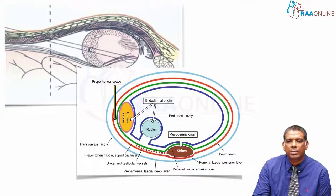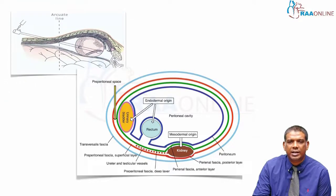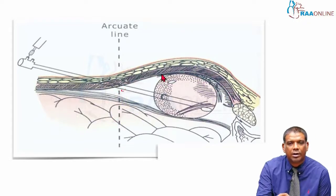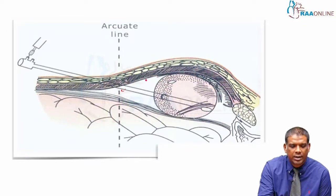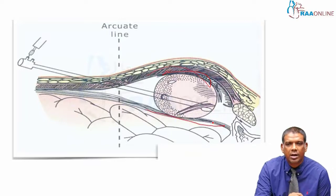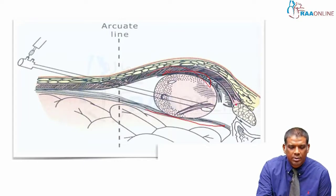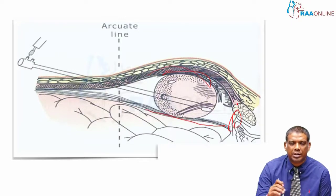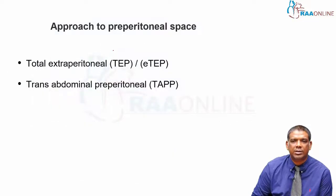When you approach a preperitoneal dissection below the arcuate line, you find that the structures present are the fascia transversalis, the rectus abdominis, and the peritoneum. The pubic bone will also be visible in this region. This is the preperitoneal space — it's a potential space that can be created.